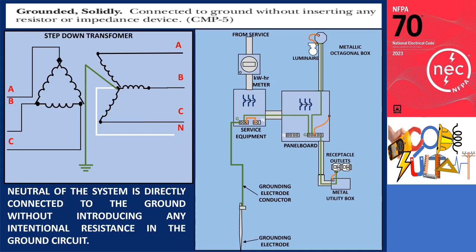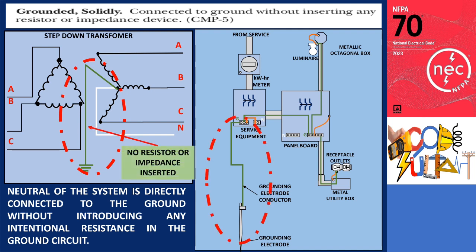Grounded solidly means connected to the ground without inserting any resistor or impedance device. The illustration shows a system that is solidly grounded, where the neutral of the system is directly connected to the ground without introducing any intentional resistance in the ground circuit.